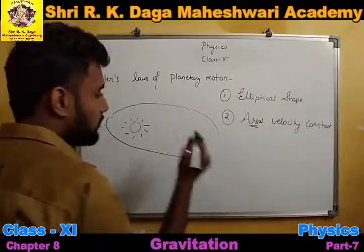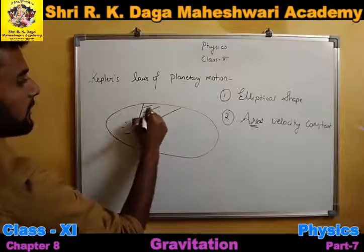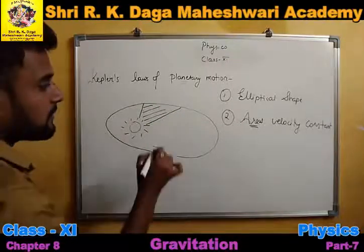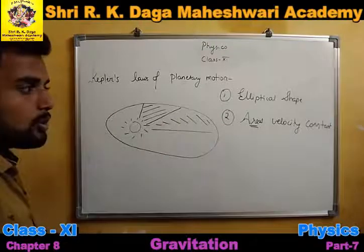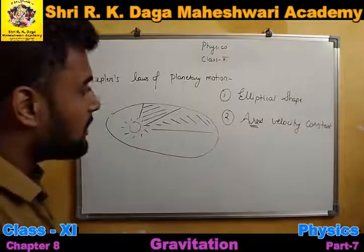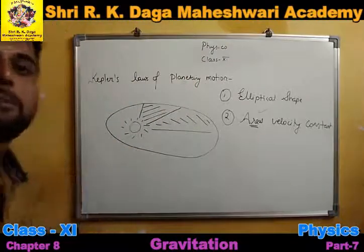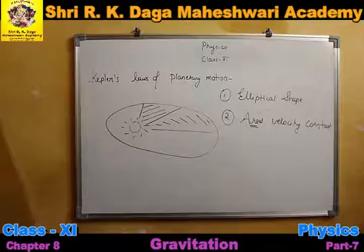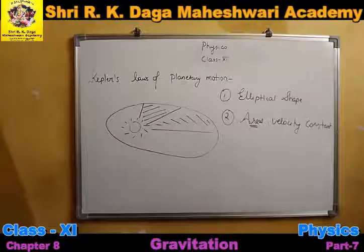The second law states that equal areas are covered in equal time intervals — meaning if two figures have the same area, the time taken to cover both areas will also be the same. Equal area is covered in equal time interval. Therefore, the areal velocity of planets while revolving around the Sun is constant.